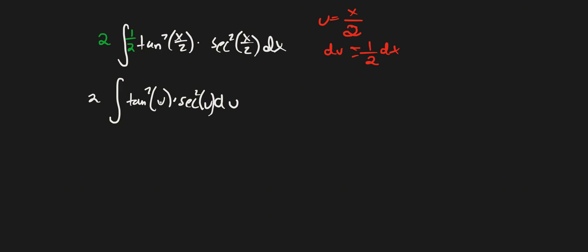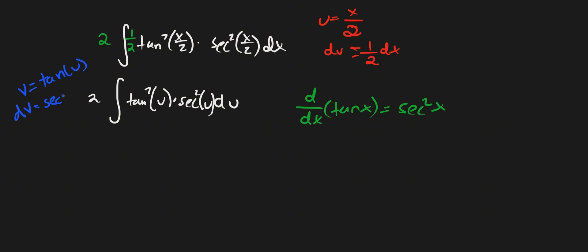We know that the derivative of tan(x) equals sec²(x). So we do another substitution: since we already used u, we set v equal to tangent u, then dv equals secant squared u du.